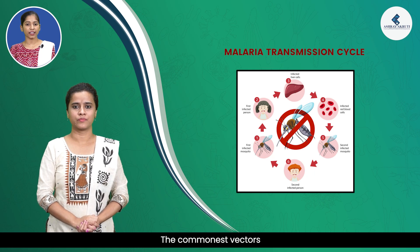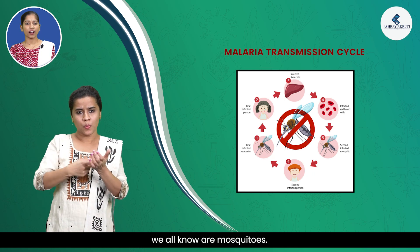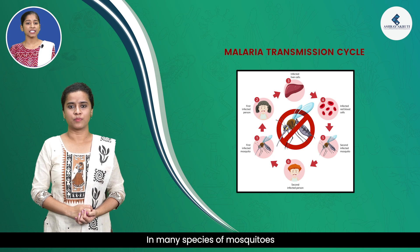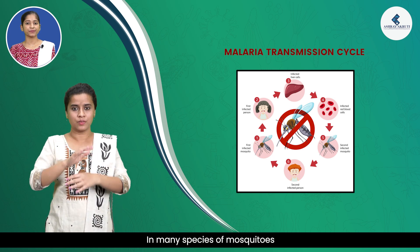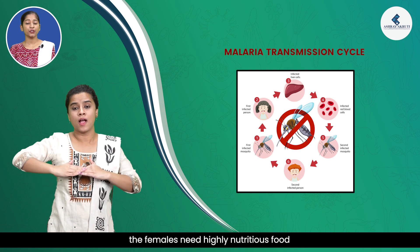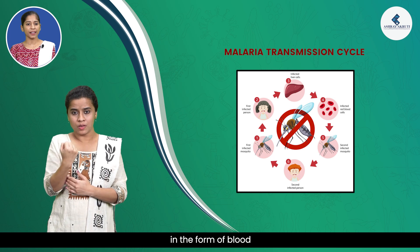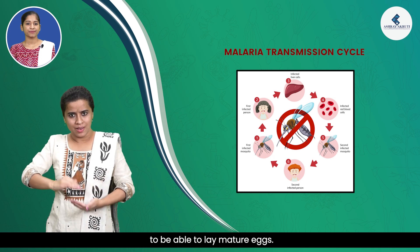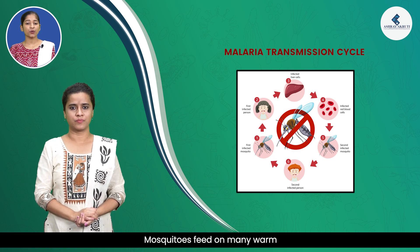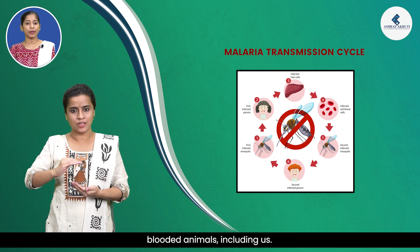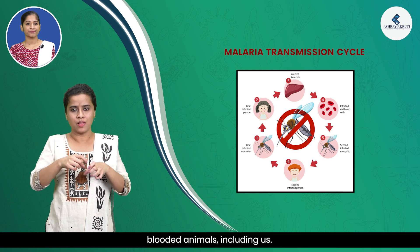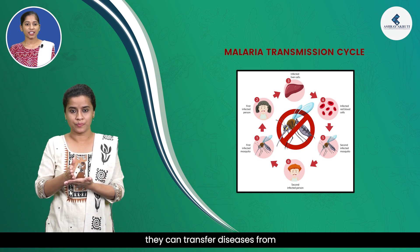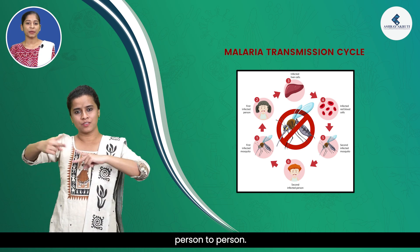The commonest vectors we all know are mosquitoes. In many species of mosquitoes, the females need highly nutritious food in the form of blood to be able to lay mature eggs. Mosquitoes feed on many warm-blooded animals including us, and in this way they can transfer diseases from person to person.